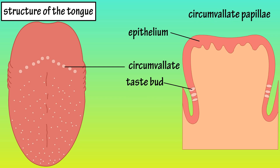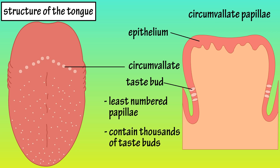Circumvallate papillae are large and dome shaped, and they are the least numerous papillae, usually between 10 and 12 on a tongue, and together they form a V shape. Each of these is housed by a deep narrow depression, and they contain thousands of taste buds.